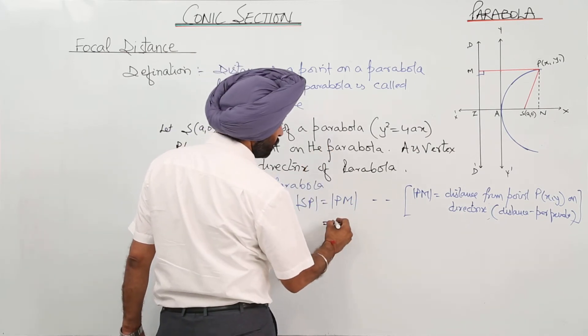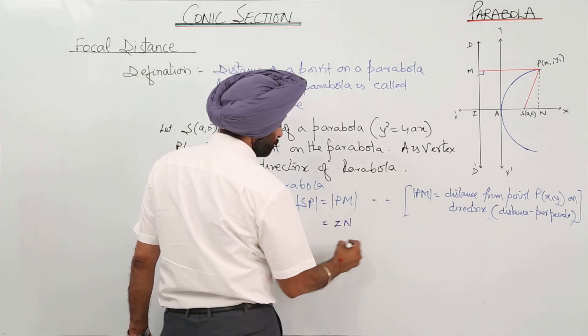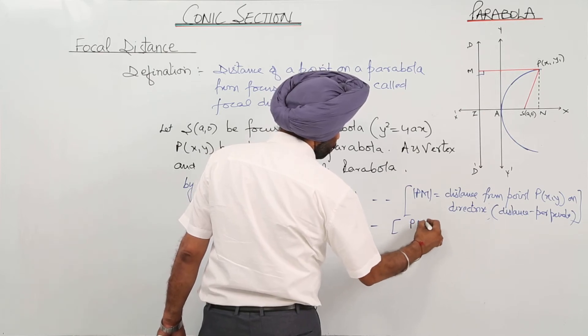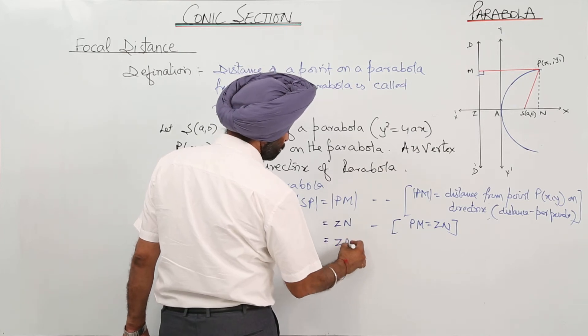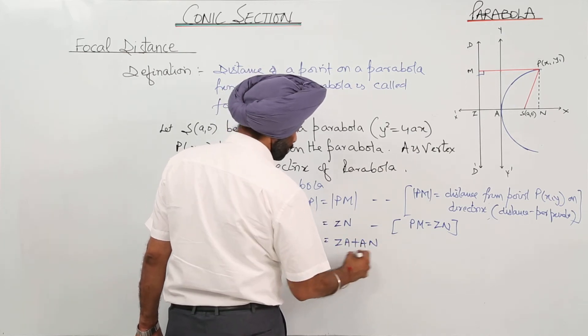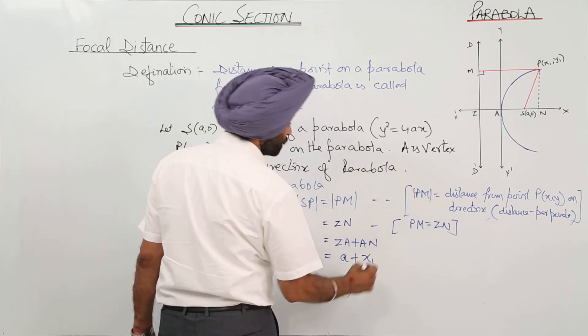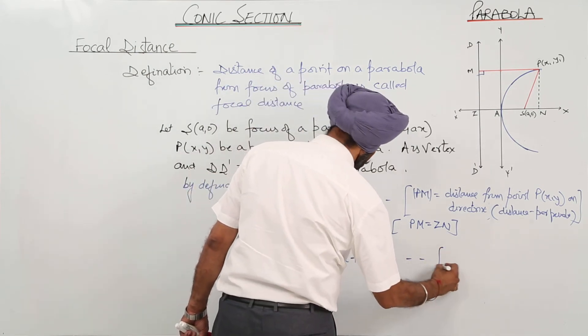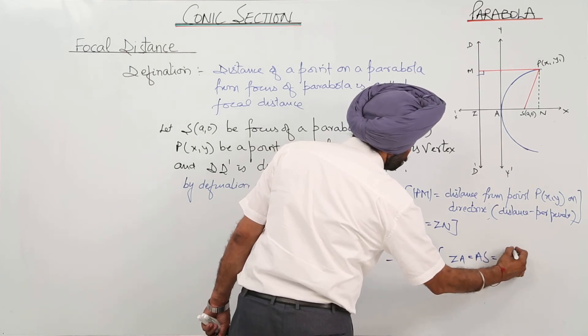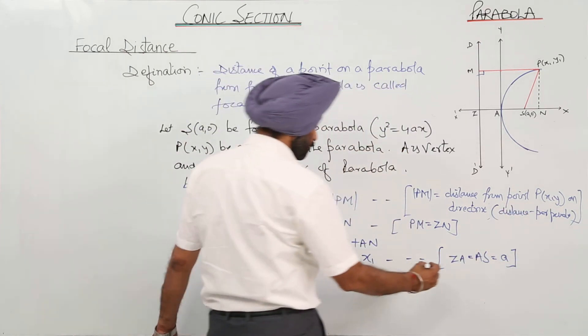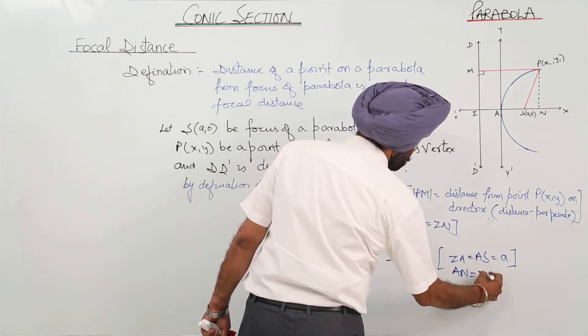PM. From the figure, PM is equal to ZA, and ZA is equal to ZA plus AN. ZA is what? It is a, and AN is x₁. ZA equals AS, and AN equals x₁.